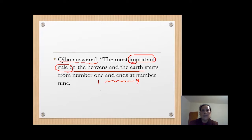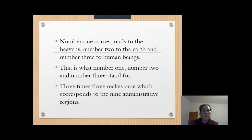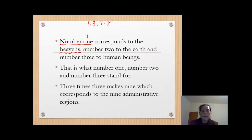That's from ancient times — people paid more attention to numbers. Number one means heaven. We were talking about before: number one, three, five, seven, nine — they are all the yang numbers. So heaven is yang, number one is yang.